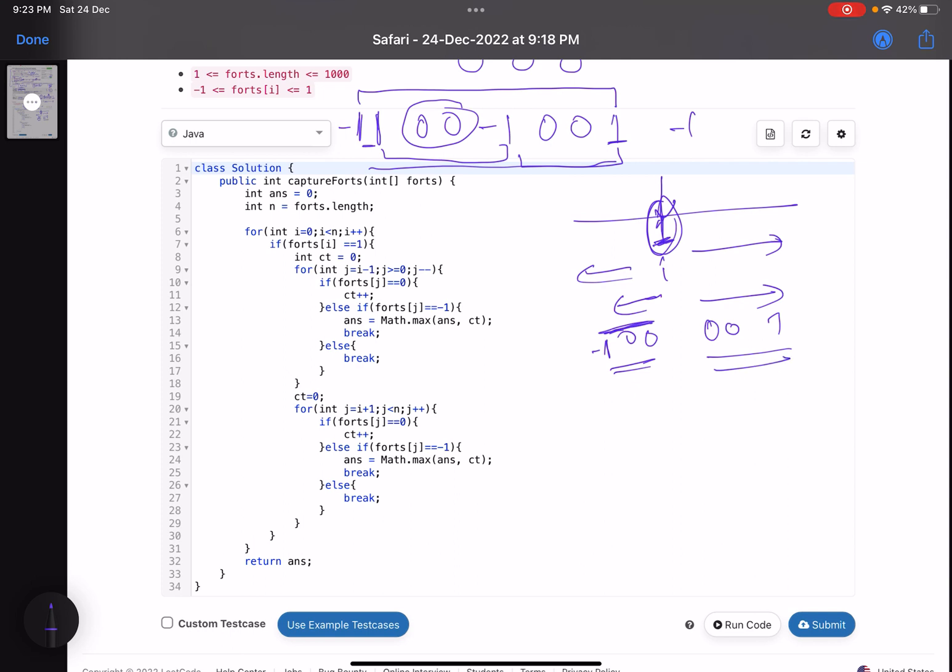And the time complexity will be, for every i, suppose you have n options for i. Similarly, at max in every iteration you will be moving x distance here and y distance here, and what is x plus y? That is n. So n cross n. Let's look into the code.